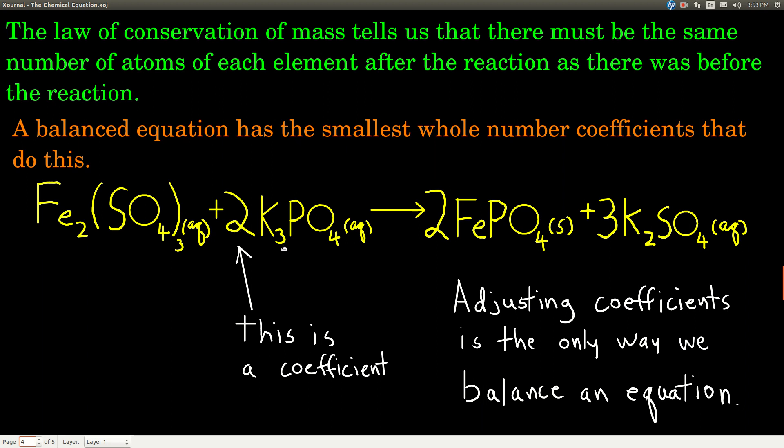Potassium's, 2 times 3 is 6 on the left, 3 times 2 is 6 on the right. Phosphorus, 2 times 1 is 2, 2 times 1 is 2. So everything's balanced.